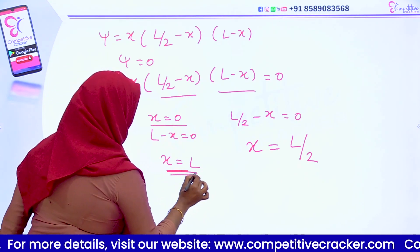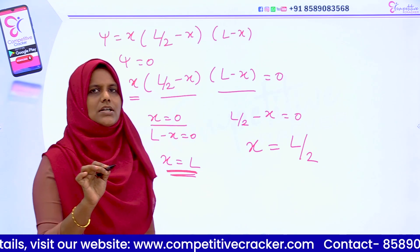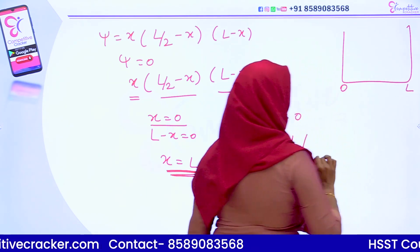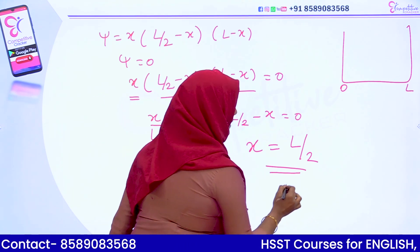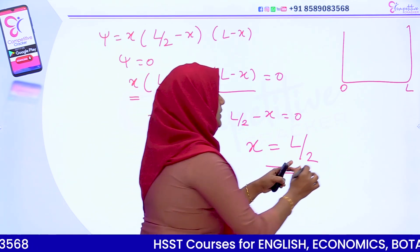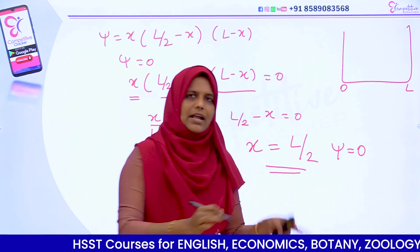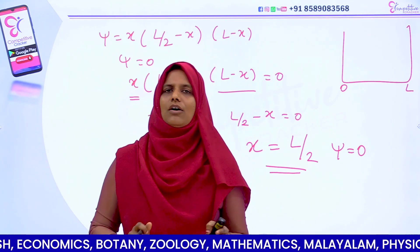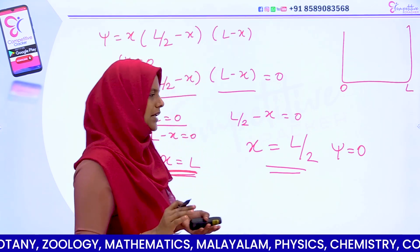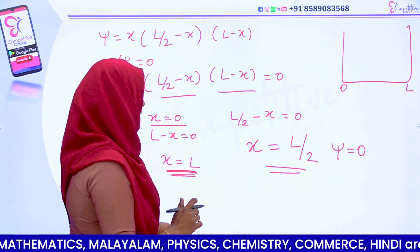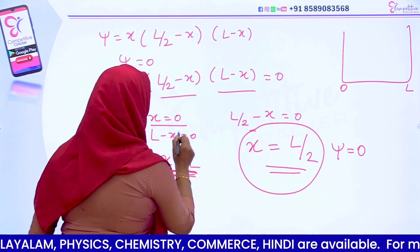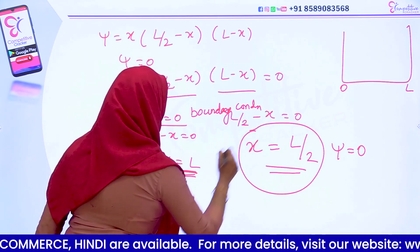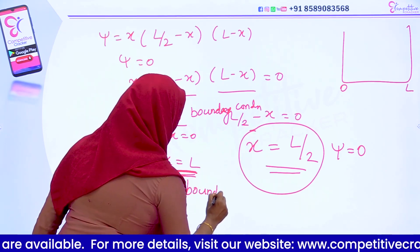If x is equal to zero and x is equal to L, we have boundary conditions. In this one-dimensional box, the boundary conditions are x equal to zero and x equal to L. Now, x equal to L/2 is a node — the point where there is zero probability of finding the particle.